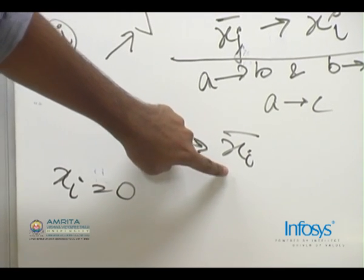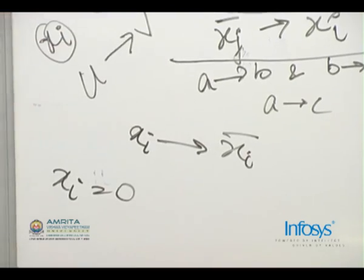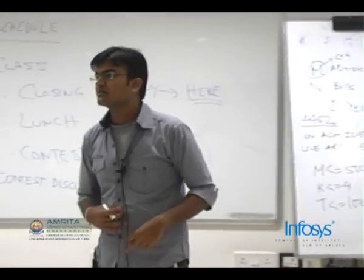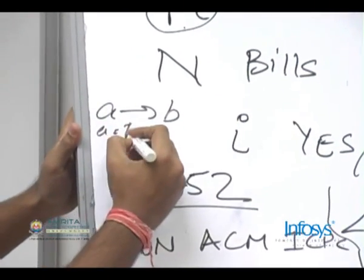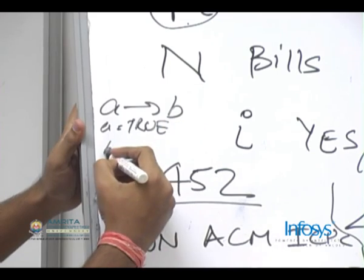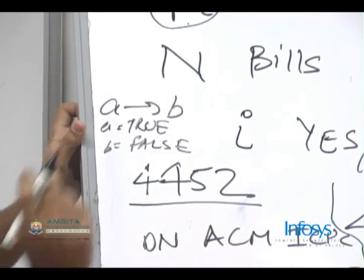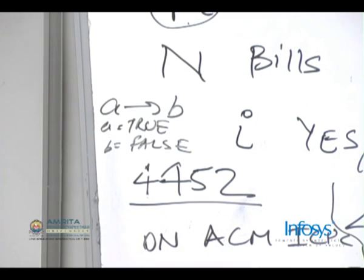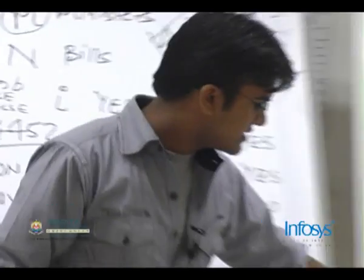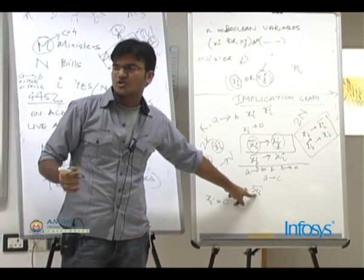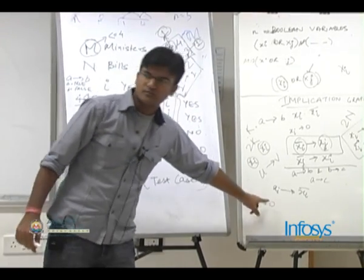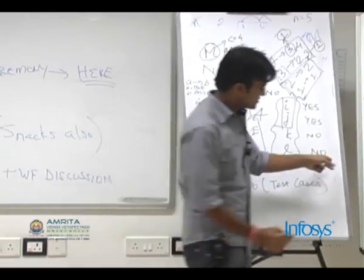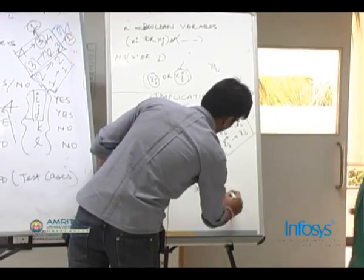So if there is a path that does not necessarily mean that it's a contradiction. A implies B is false when A is true and B is false. For all the other cases this expression is true. So if you are saying that XI implies XI bar is always false, I have given you a case when it is not. Put XI equal to 0, then this would become 0 implies 1 which is true.